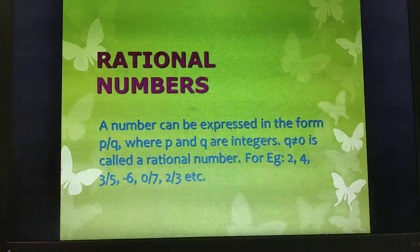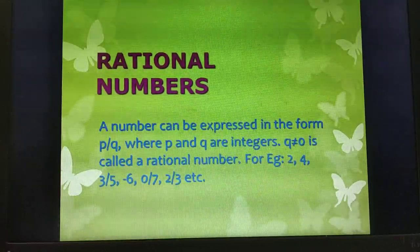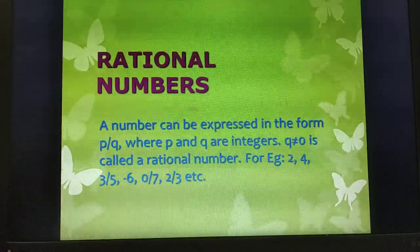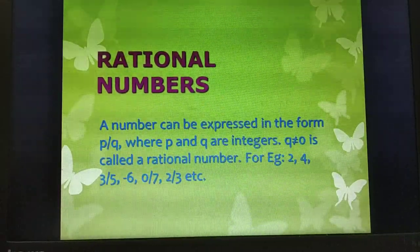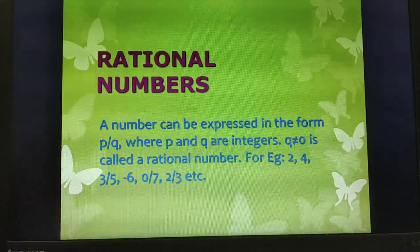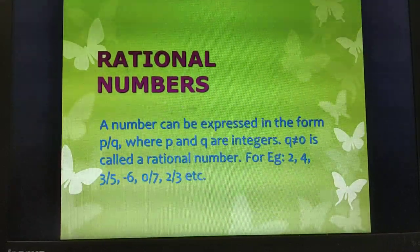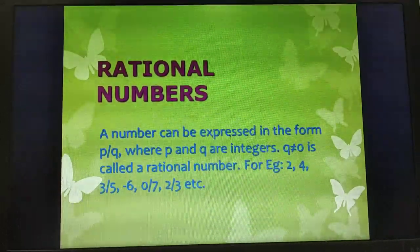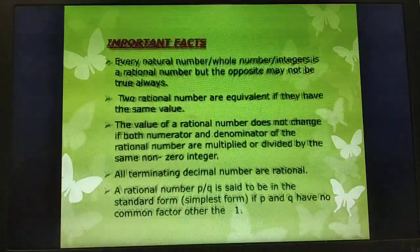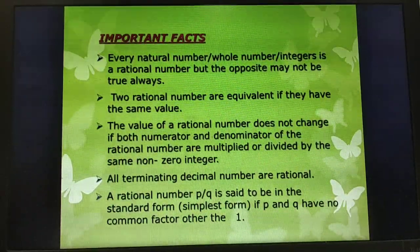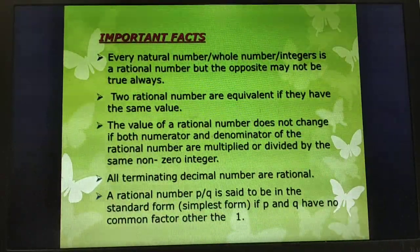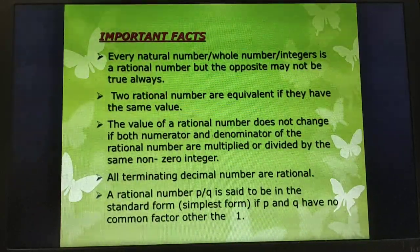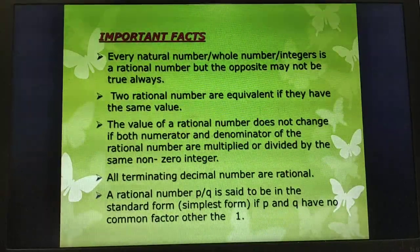These are some examples of rational numbers. As you see here, 2 and 4 are written as 2/1 and 4/1, so they are represented in the form P/Q. Some important facts: every natural number, whole number, or integer is a rational number, but the opposite may not always be true.